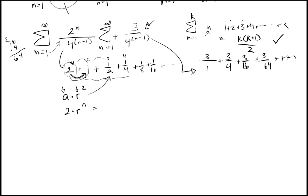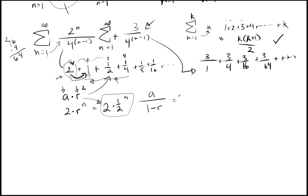Checking: 2 times 1/2 to the 0 is 2; 2 times 1/2 to the 1 is 1; 2 times 1/2 squared is 2 times 1/4, which is 1/2. So we have 2 times 1/2 to the n. The handy thing is this helps you find sums, because there's a formula: the sum S equals a over 1 minus r. That gives us the total sum.